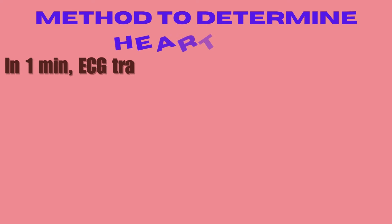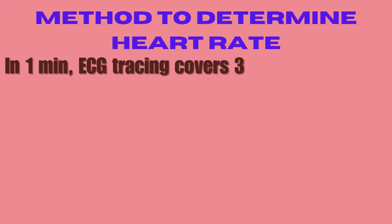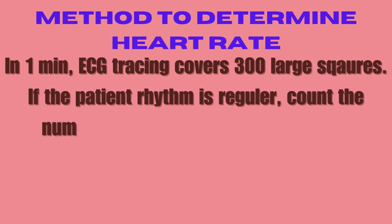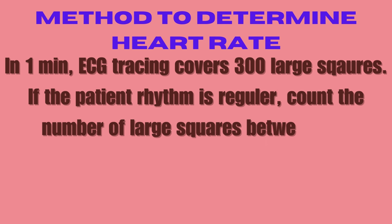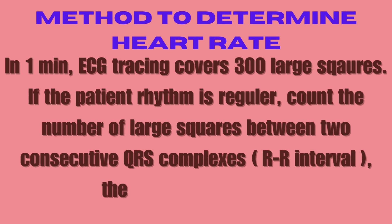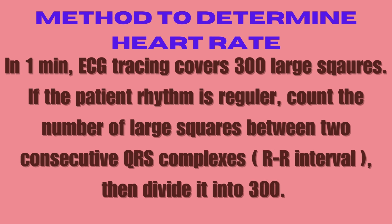Method to determine heart rate: in 1 minute, the ECG tracing covers 300 large squares. If the patient's rhythm is regular, count the number of large squares between 2 consecutive QRS complexes — i.e. the RR interval — then divide it into 300.